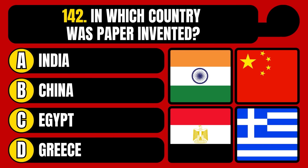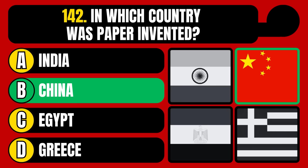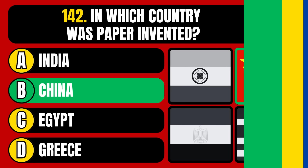In which country was paper invented? India, China, Egypt, or Greece? The correct answer is option B, China.